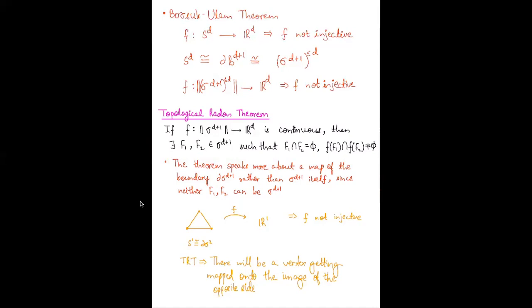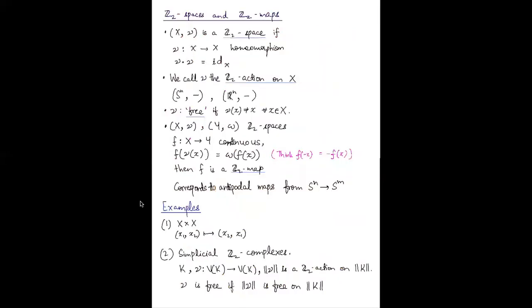As an example, in the case d equals one, the boundary of sigma_{d+1} or sigma_2 becomes the boundary of this triangle. So what this theorem is telling us is that any map from here to R^1 — for any map — there will be some vertex of the triangle whose image gets mapped onto the image of the opposite side. We will be looking at a proof of this later, but before that we need to build some terminology and machinery.